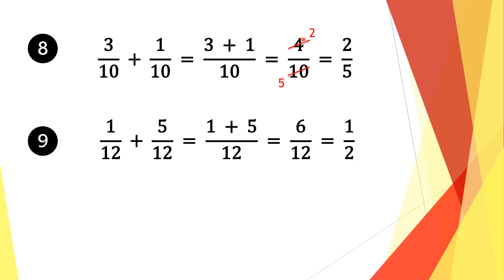Moving on to question 9. We have 1 twelfth plus 5 twelfths, and we have a common denominator of 12. We take a common factor of 12. 12 divided by 12 is 1, and 1 times 1 is 1. Then we do the same for the second fraction: 12 divided by 12 is 1, and 1 times 5 is 5. We add the numerators: 1 plus 5 is 6, and we bring along the denominator 12. Top and bottom are divisible by 6: 6 divided by 6 is 1 and 12 divided by 6 is 2. So our solution is 1 half.